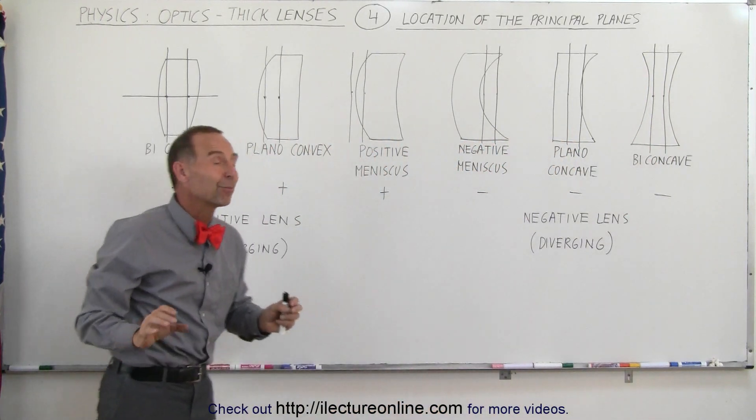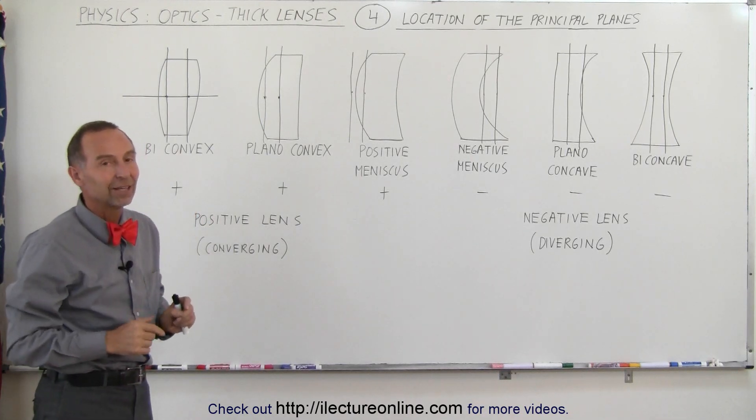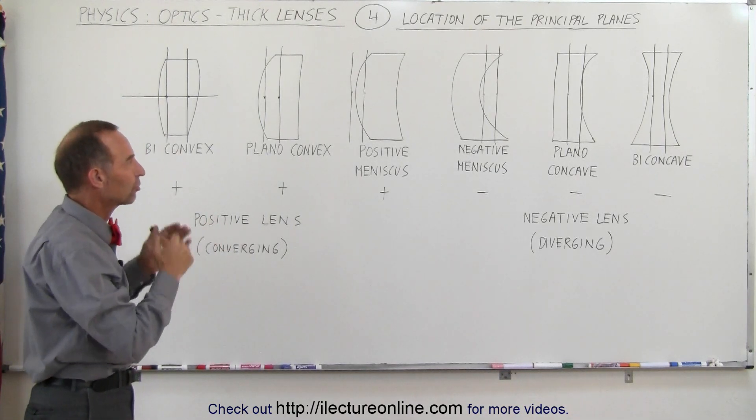So you can see that the principal planes and the principal points don't necessarily have to be inside the lens, depending upon the actual structure of the lens itself.